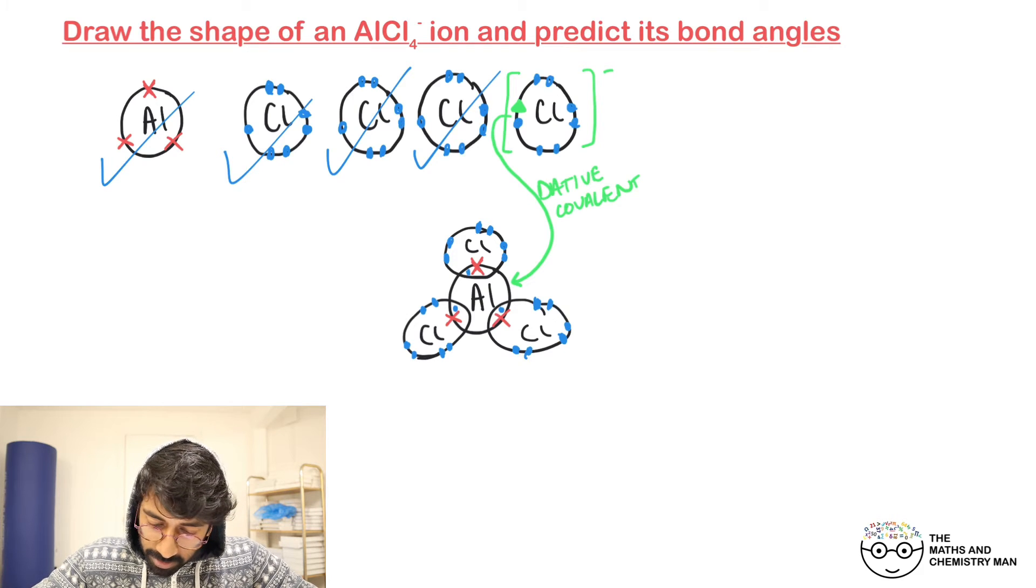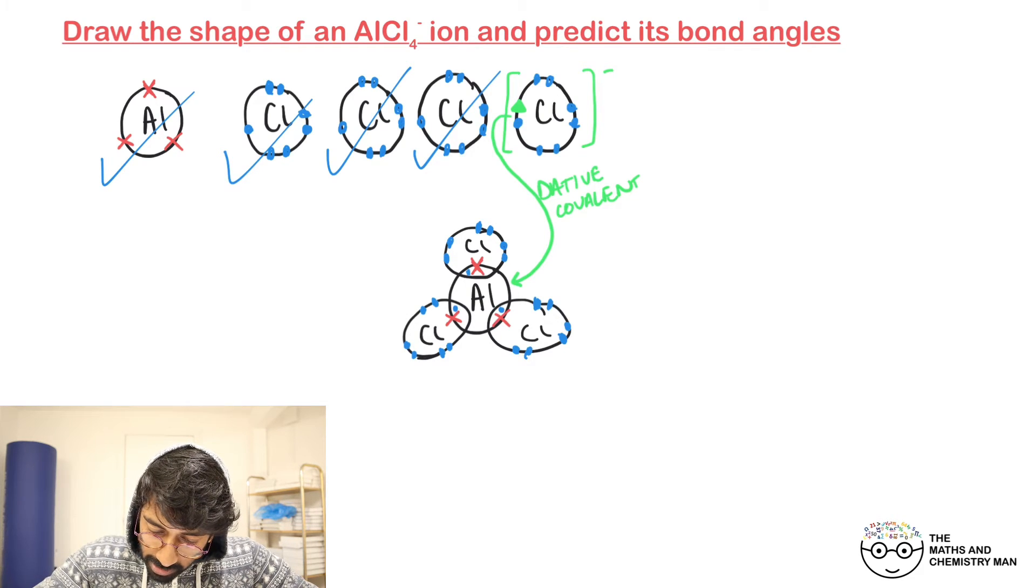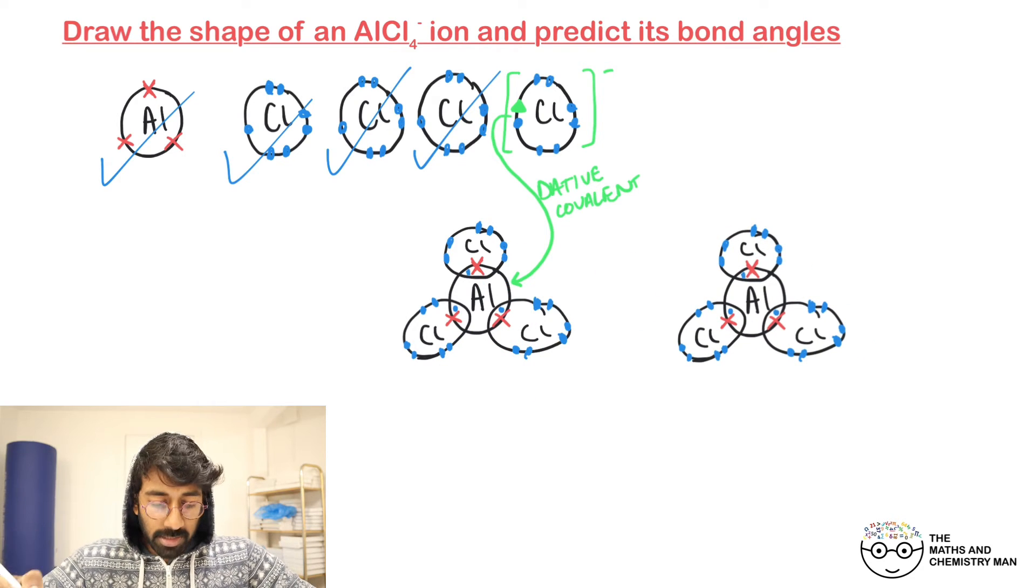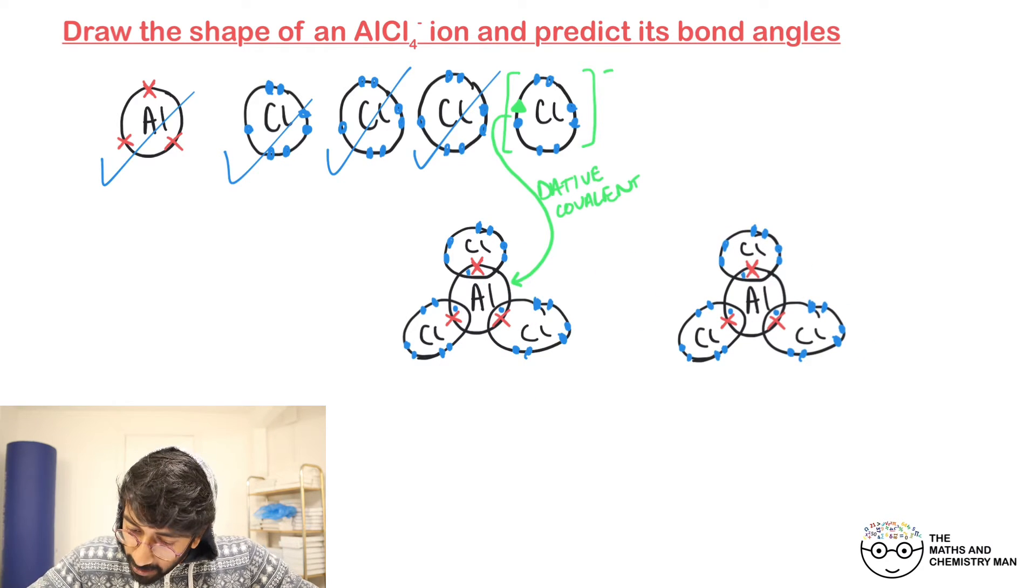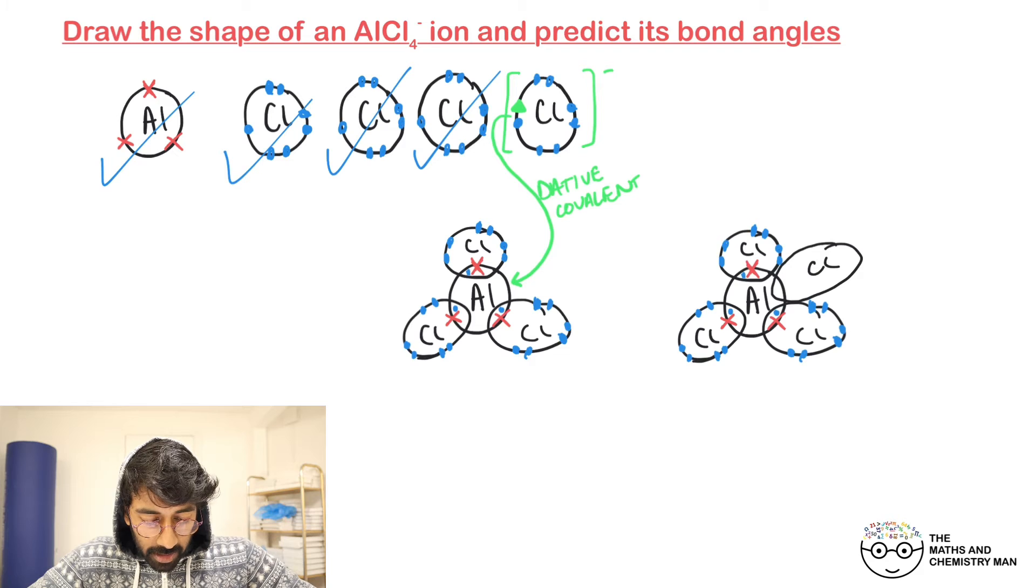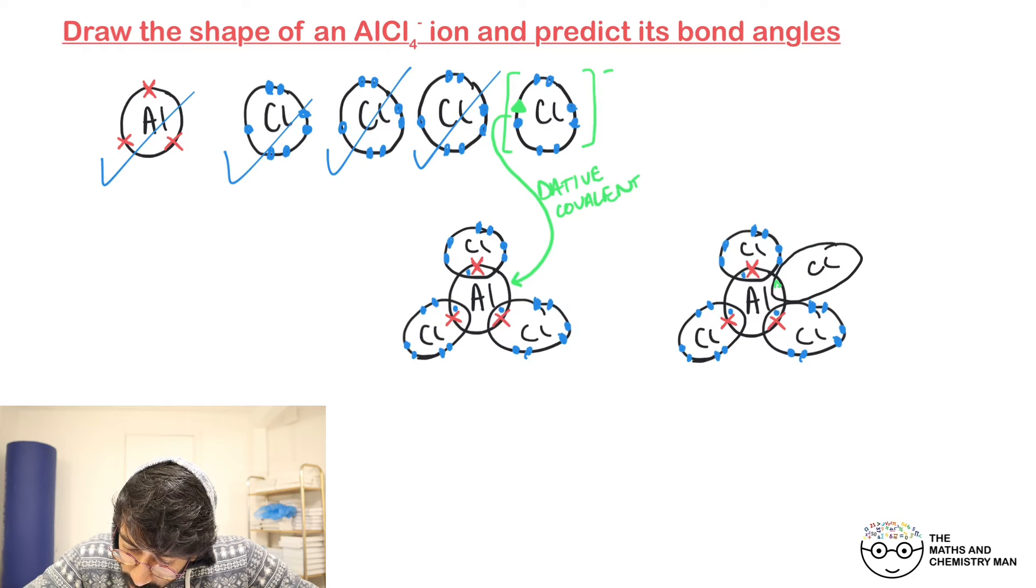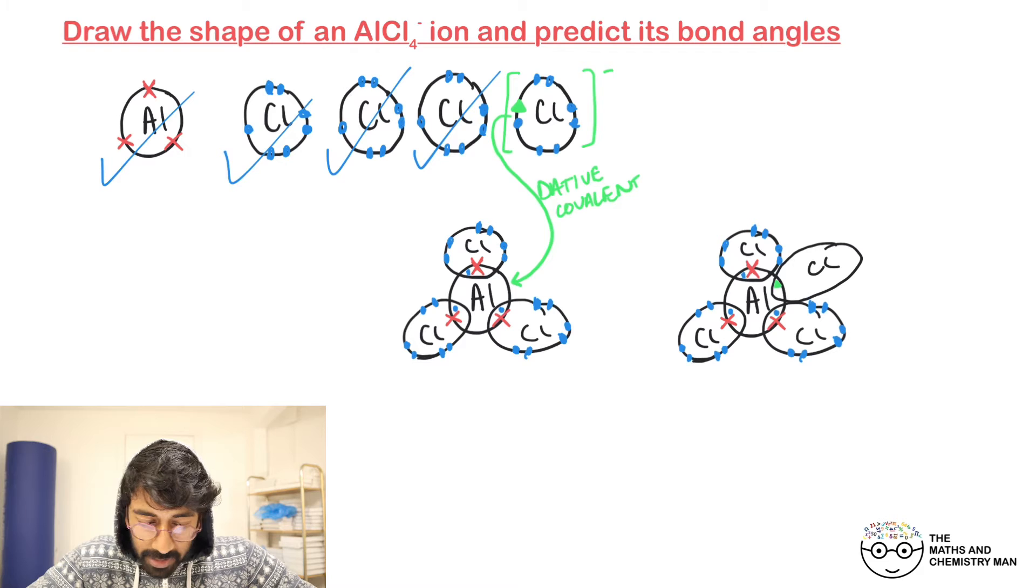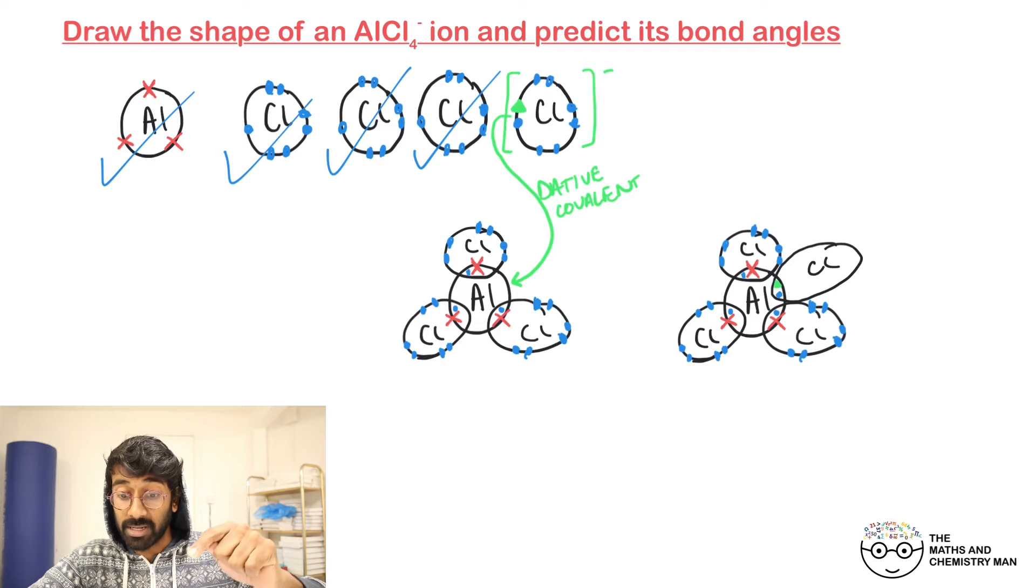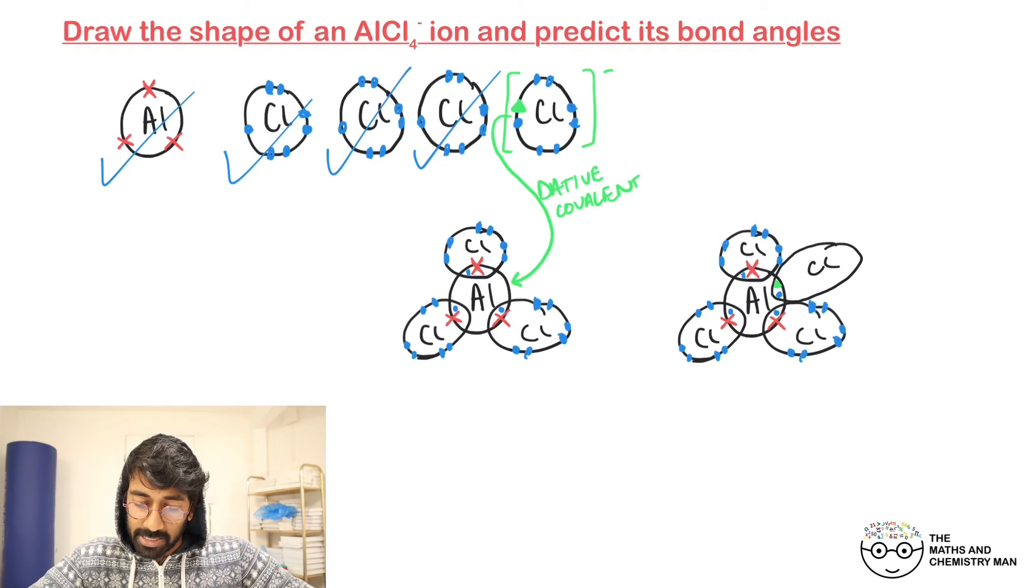We're going to have the same thing, but with another chlorine attached. In the middle I'm going to put the green triangle and one blue dot. That's the two electrons that have come from that chloride ion that's now created a bond to the aluminium. That's your dative covalent bond.